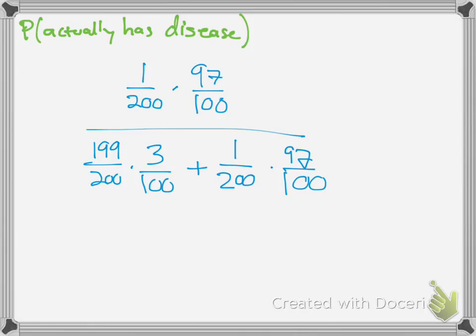If you punch that into your calculator, you would get approximately 13.9%. So think about that — if you take a test and you test positive, the probability that you actually have the disease comes back quite low due to the rarity of the disease and the false positive rate.